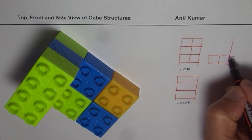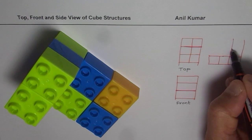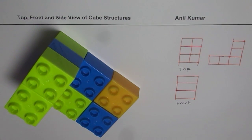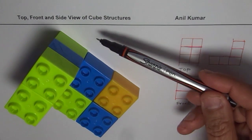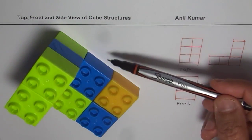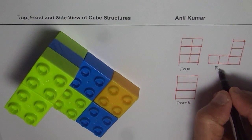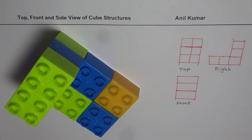That is the L-shape we are talking about. When you look at it, do you see any change in depth? Here the depth is the same throughout, so there is no change in depth. That is the right view.